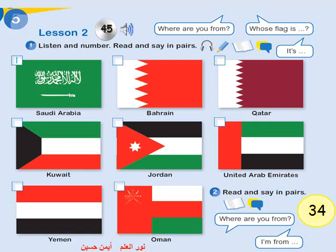Unit 5, Lesson 2, Activity 1. Listen and number. Read and say in pairs. Where are you from? 1. Riyadh, in Saudi Arabia. 2. I'm from Kuwait. 3. I'm from Oman. 4. I'm from Yemen. 5. I'm from Dubai, in the United Arab Emirates.